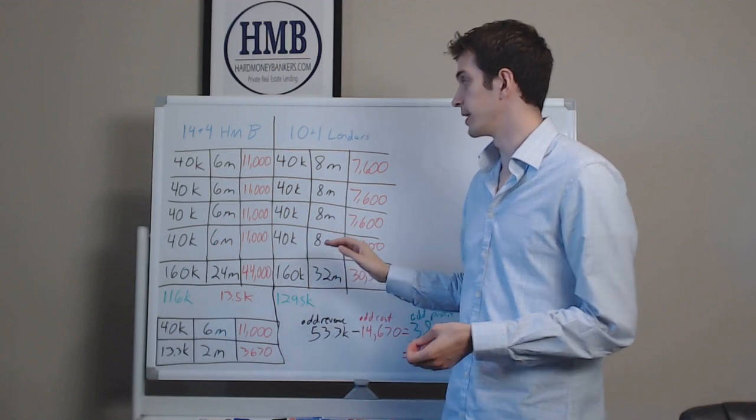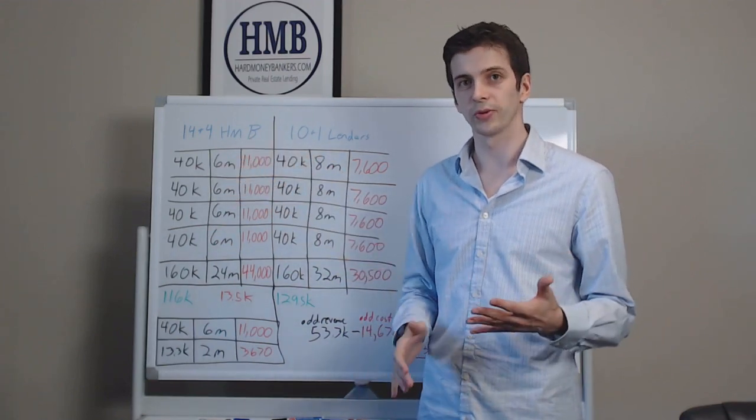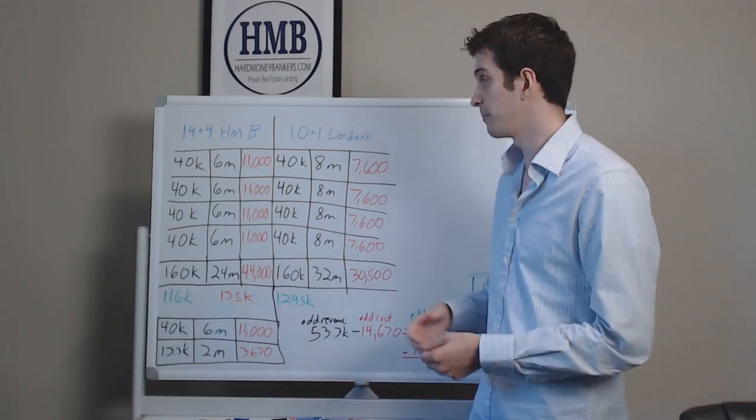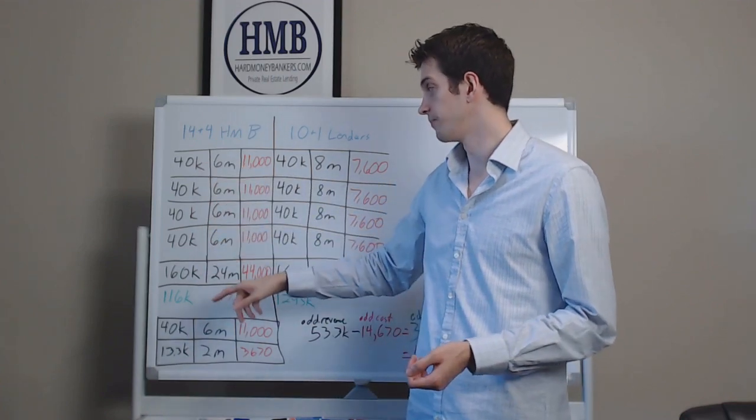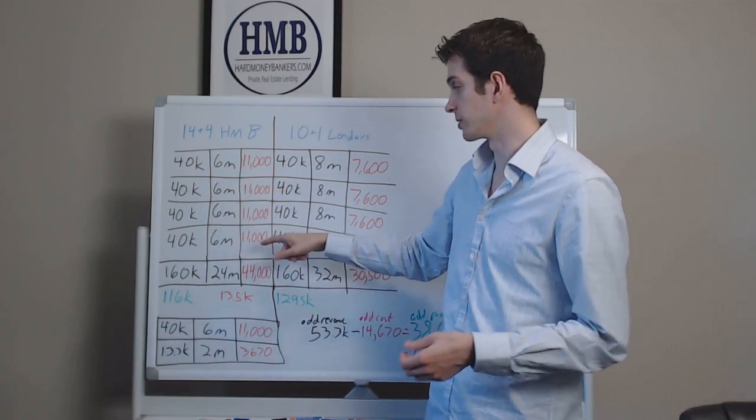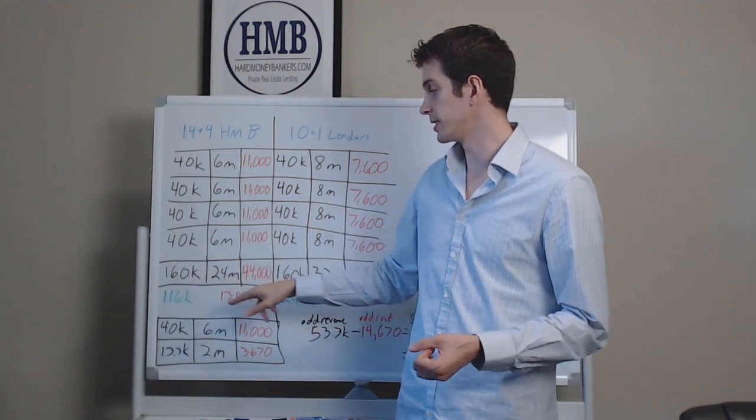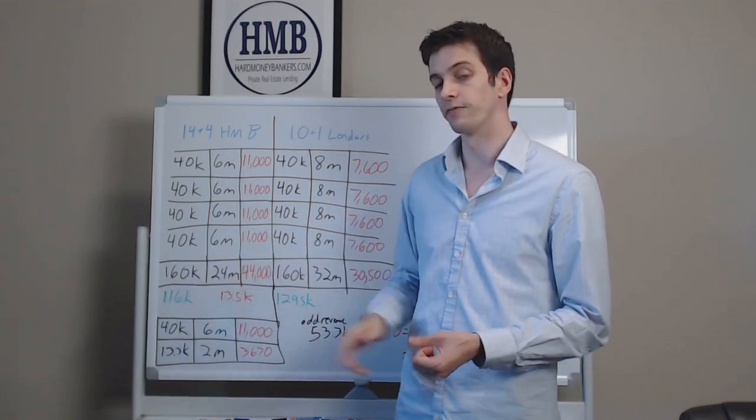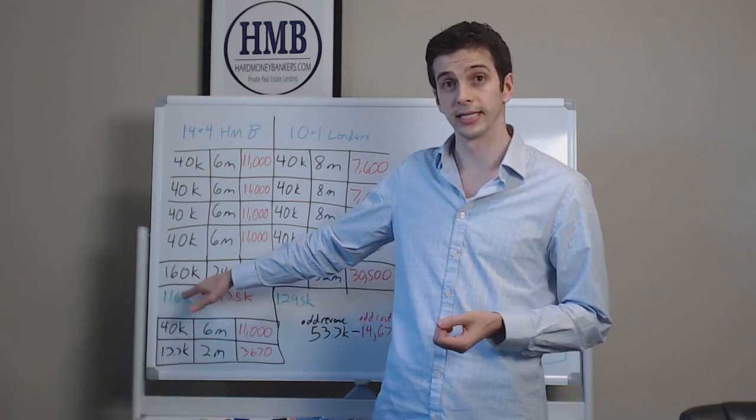So with that said, the borrower who came to us said usually he does three to four deals, now he's doing five to six. I mapped that out. So he does four deals a year at six months each with hard money bankers costing $11,000 each, he would be making $160,000 minus the $44,000 that it costs for hard money bankers, which equates to $116,000.